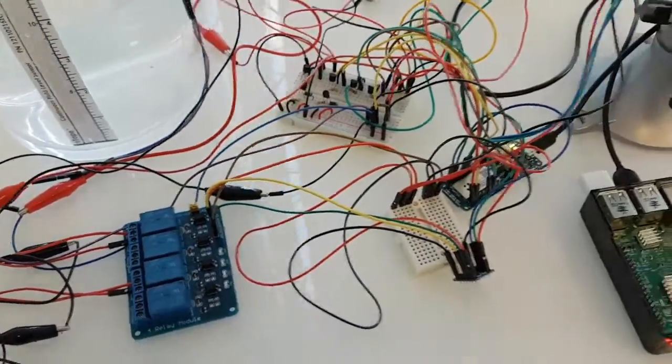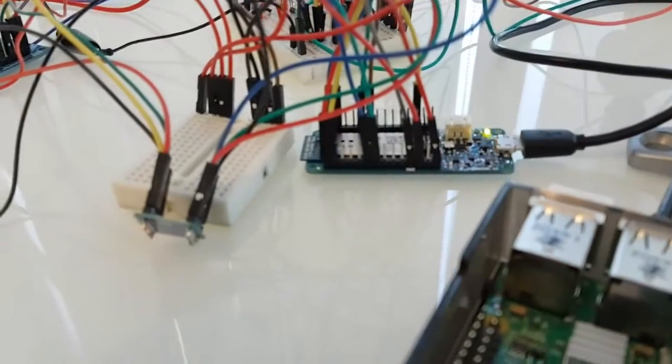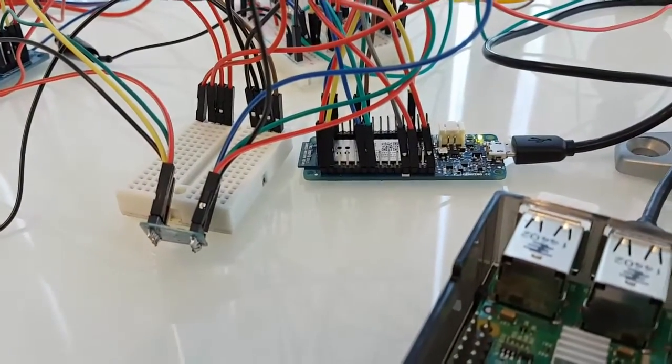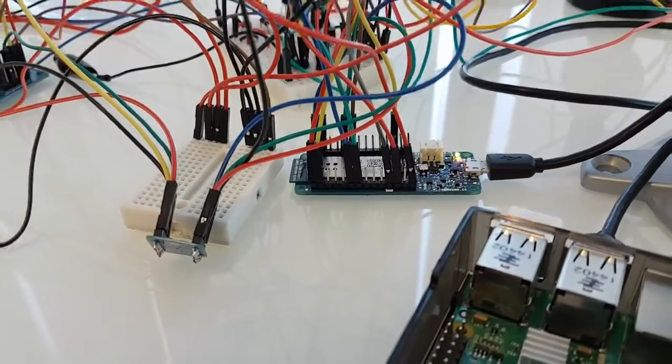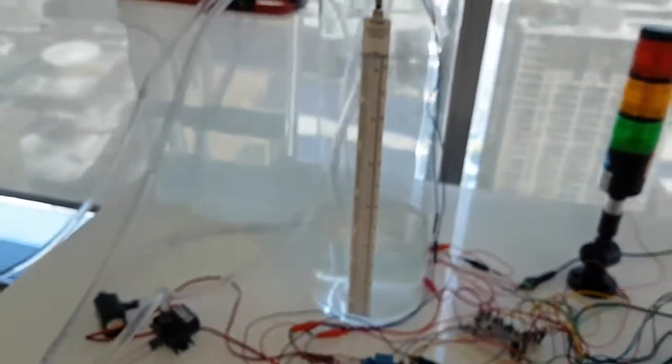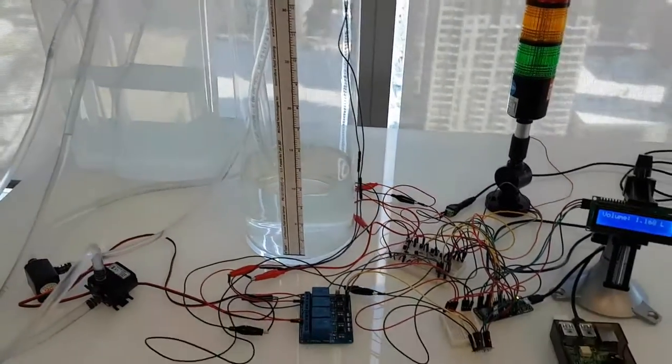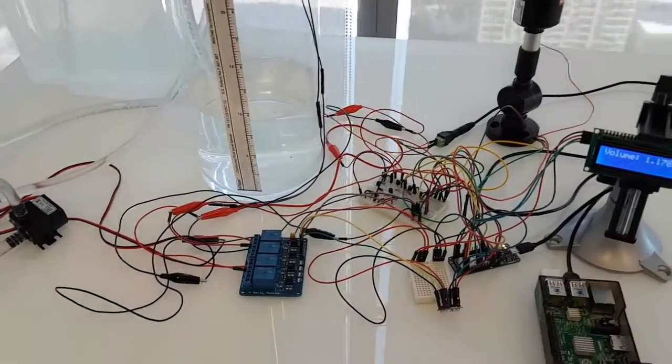The relays are attached to the same Arduino board we were using in the last video. This Arduino is acting as our PLC, and from a PLC perspective, we're using one analog input for the liquid level sensor and then a number of digital outputs to control the relays.